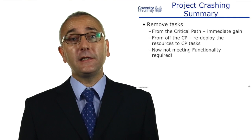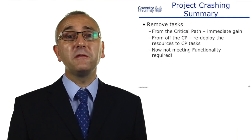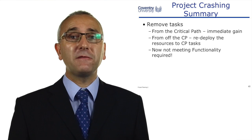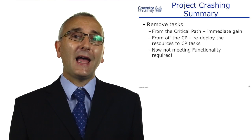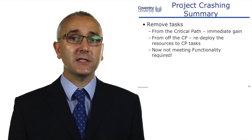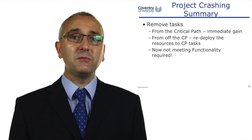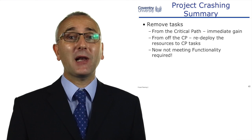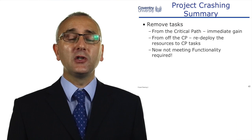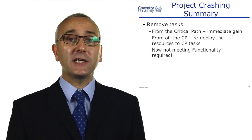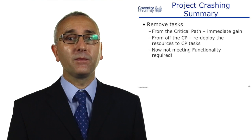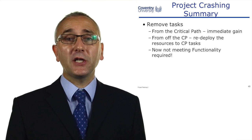Finally, to save time on the project, remove tasks. It has an immediate gain if you take a task away from the critical path. However, you're now not delivering the functionality of the project — not delivering the objectives as originally planned. So somebody is going to have to authorize that decision to de-scope the project and remove that functionality in order to save time. And that's project crashing.